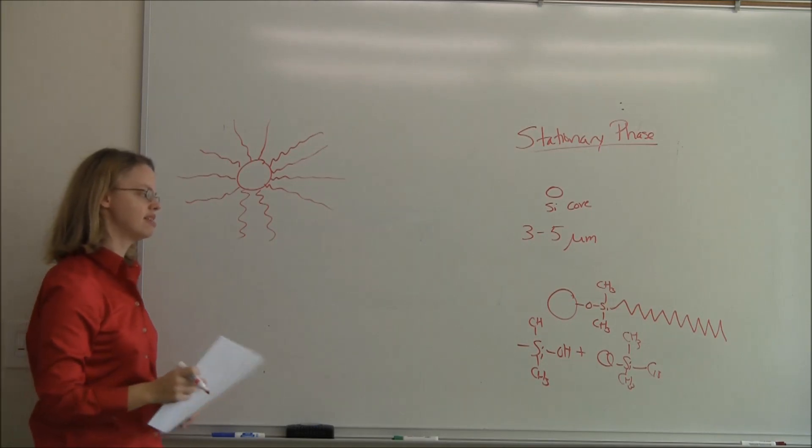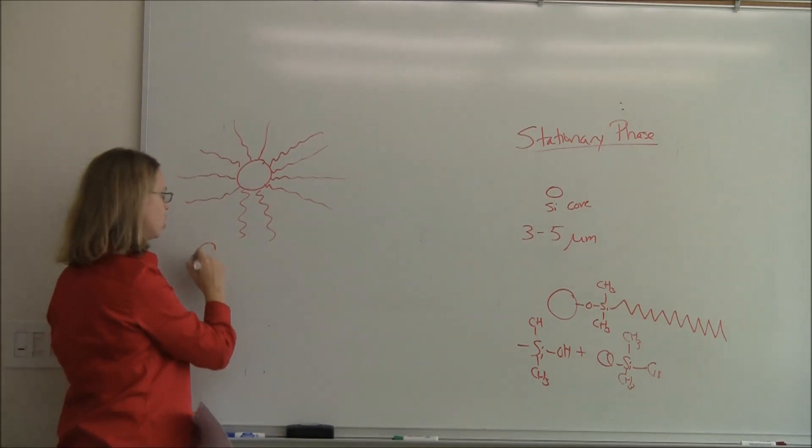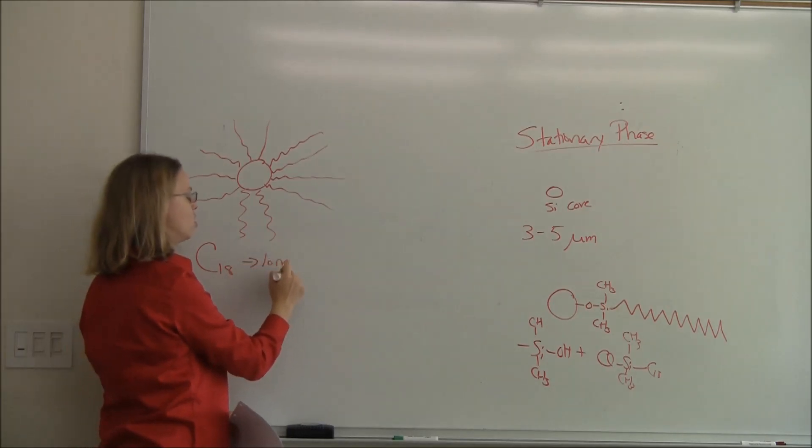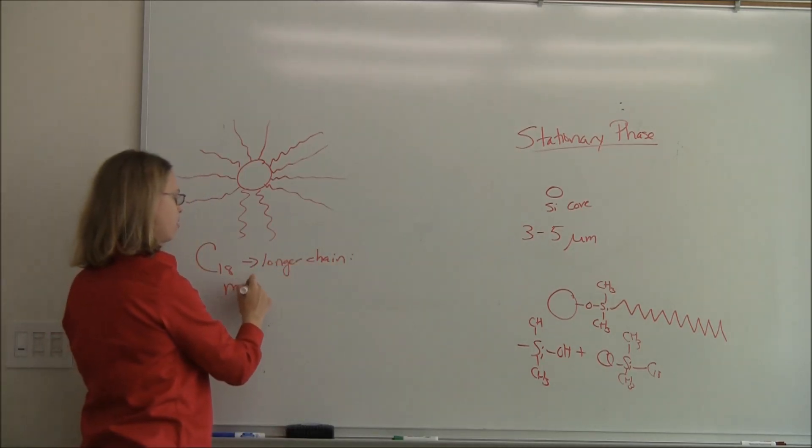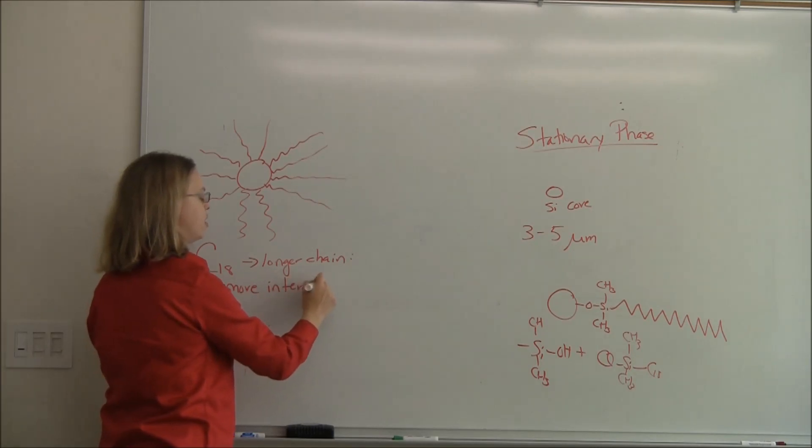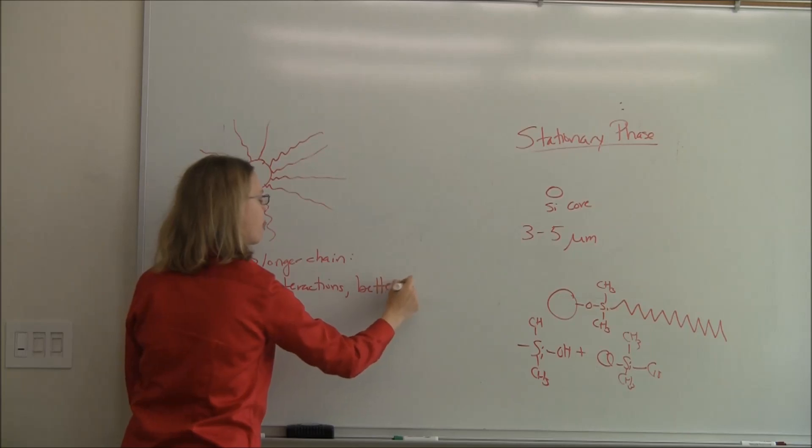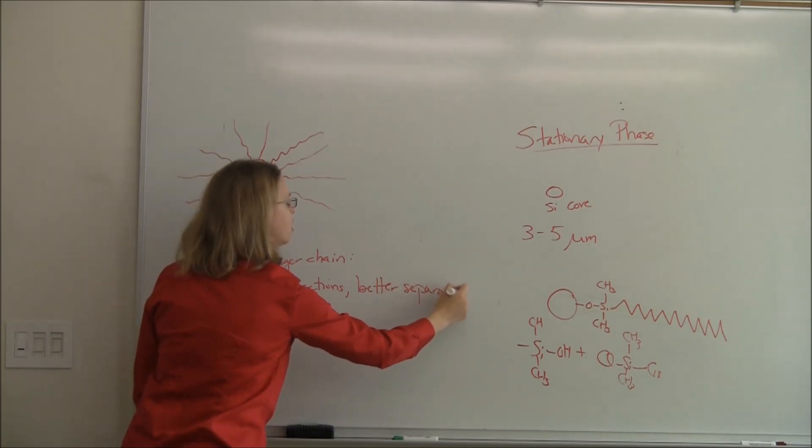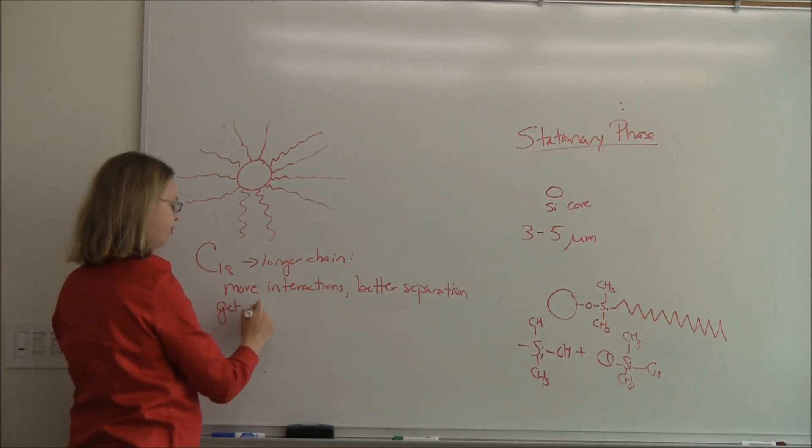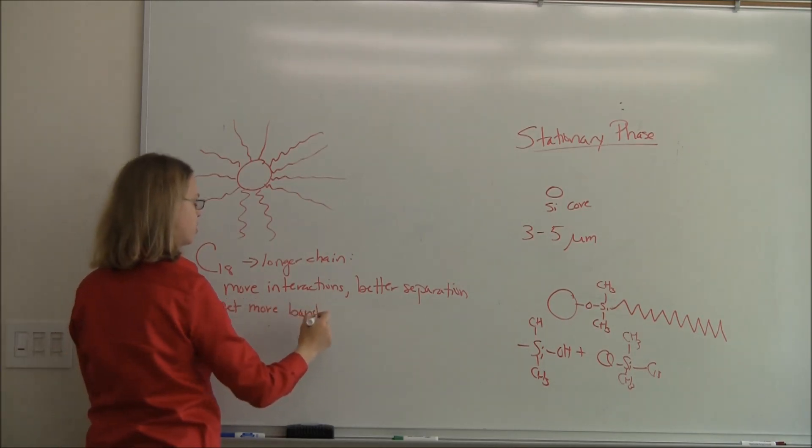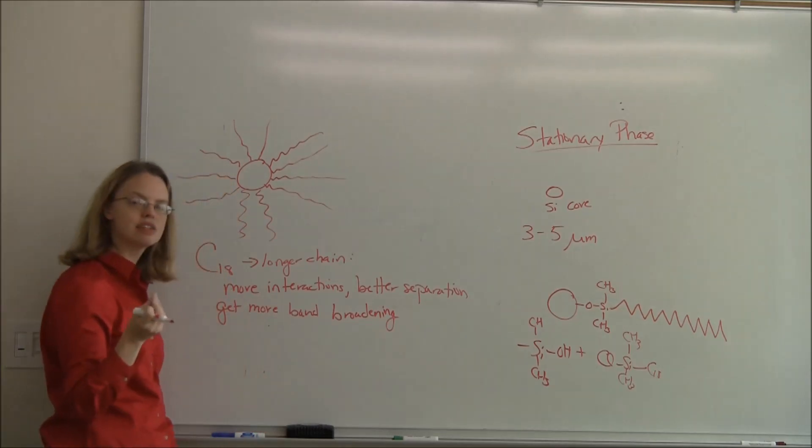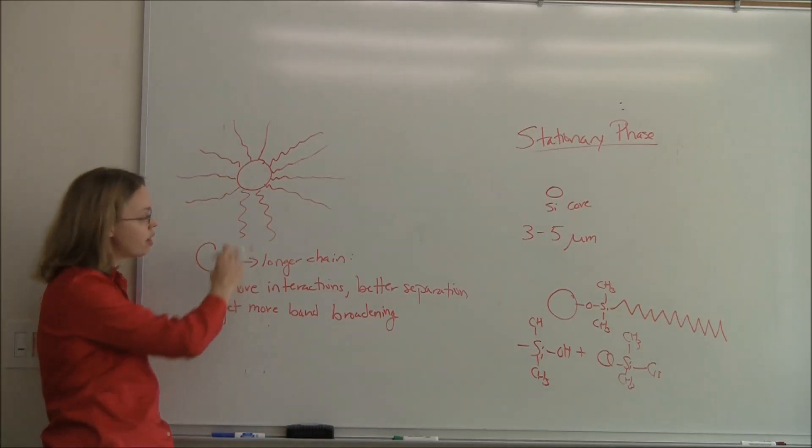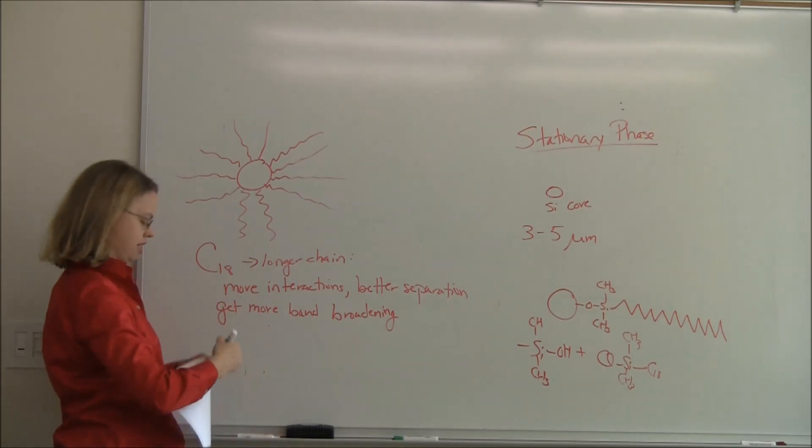There's really two popular stationary phases, C18 and C8. If you use a longer chain, so C18 is a little bit of a longer chain, and it's probably the most common stationary phase, you get more interactions with the stationary phase. And so that means you get a better separation. You also tend to get a little bit more band broadening. One of the terms for band broadening is the C term, and that has to do with whether or not your analyte can get buried in there. So you have a longer chain, it's more likely that your analyte can come and get kind of buried in the chain up there.